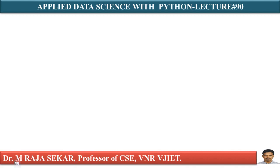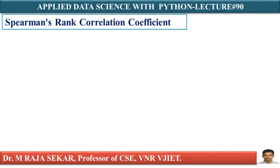My dear friends, welcome to Rajashekar classes on Applied Data Science with Python. This is lecture number 90. In this lecture, we will try to understand Spearman's Rank Correlation Coefficient. It is used to summarize the strength and direction of a relationship between two variables — direction meaning negative or positive. In my previous lecture, I discussed Pearson Correlation Coefficient. There are a few limitations in Pearson Correlation Coefficient, so we will try to understand this new measure of correlation.